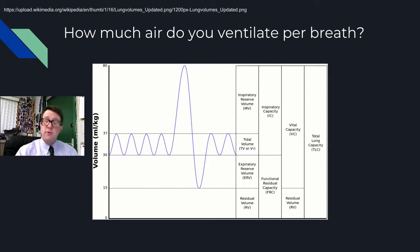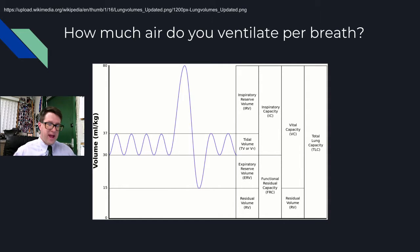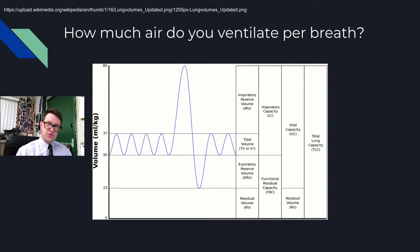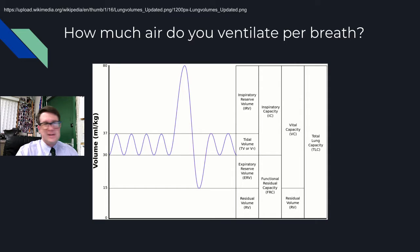Vital capacity is not your total lung volume, because it turns out we always have some air that remains trapped inside us that we cannot push out no matter what — doing so would require collapsing your lungs. We call that the residual volume, and that is something we're never going to be able to directly measure.